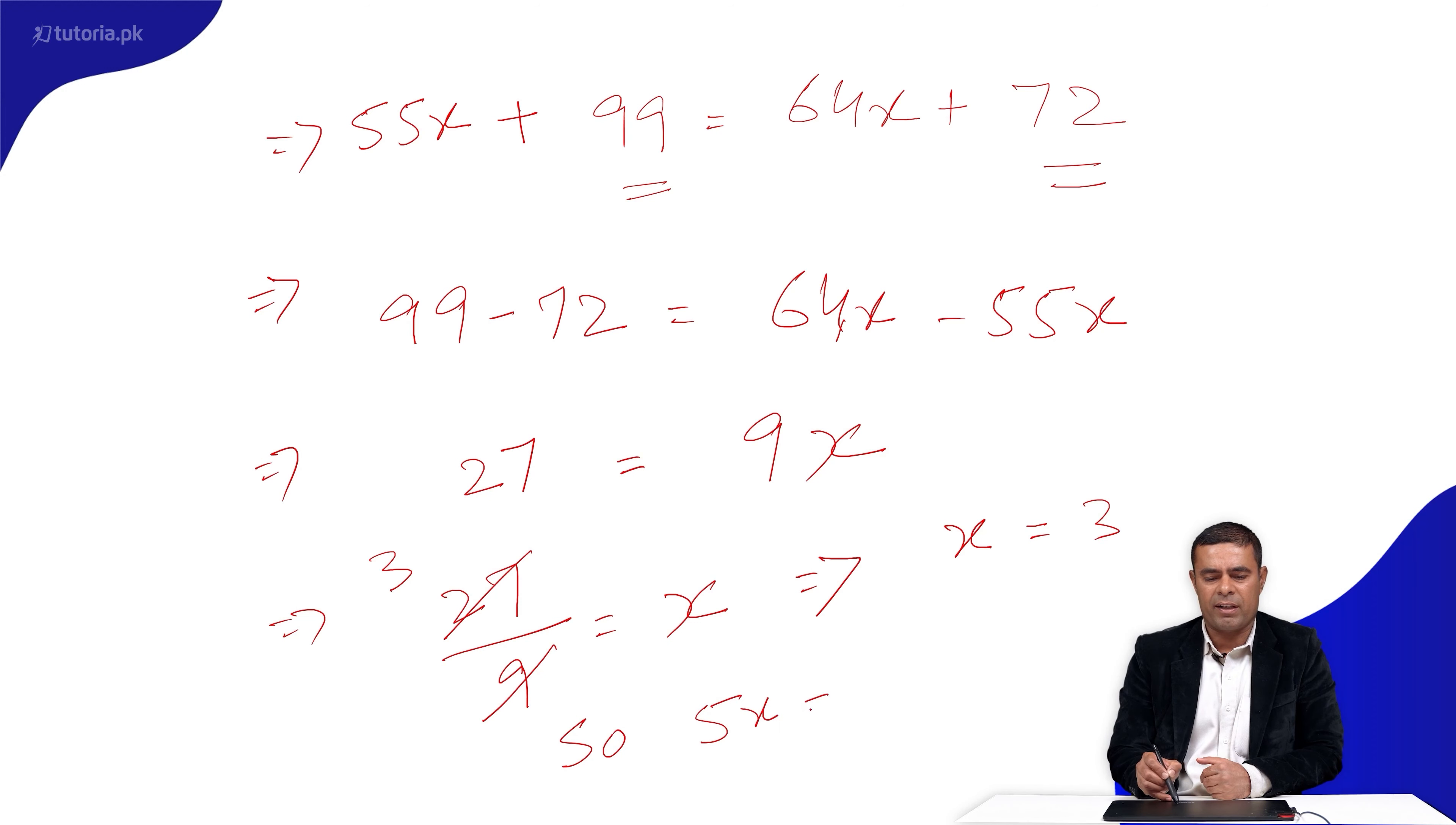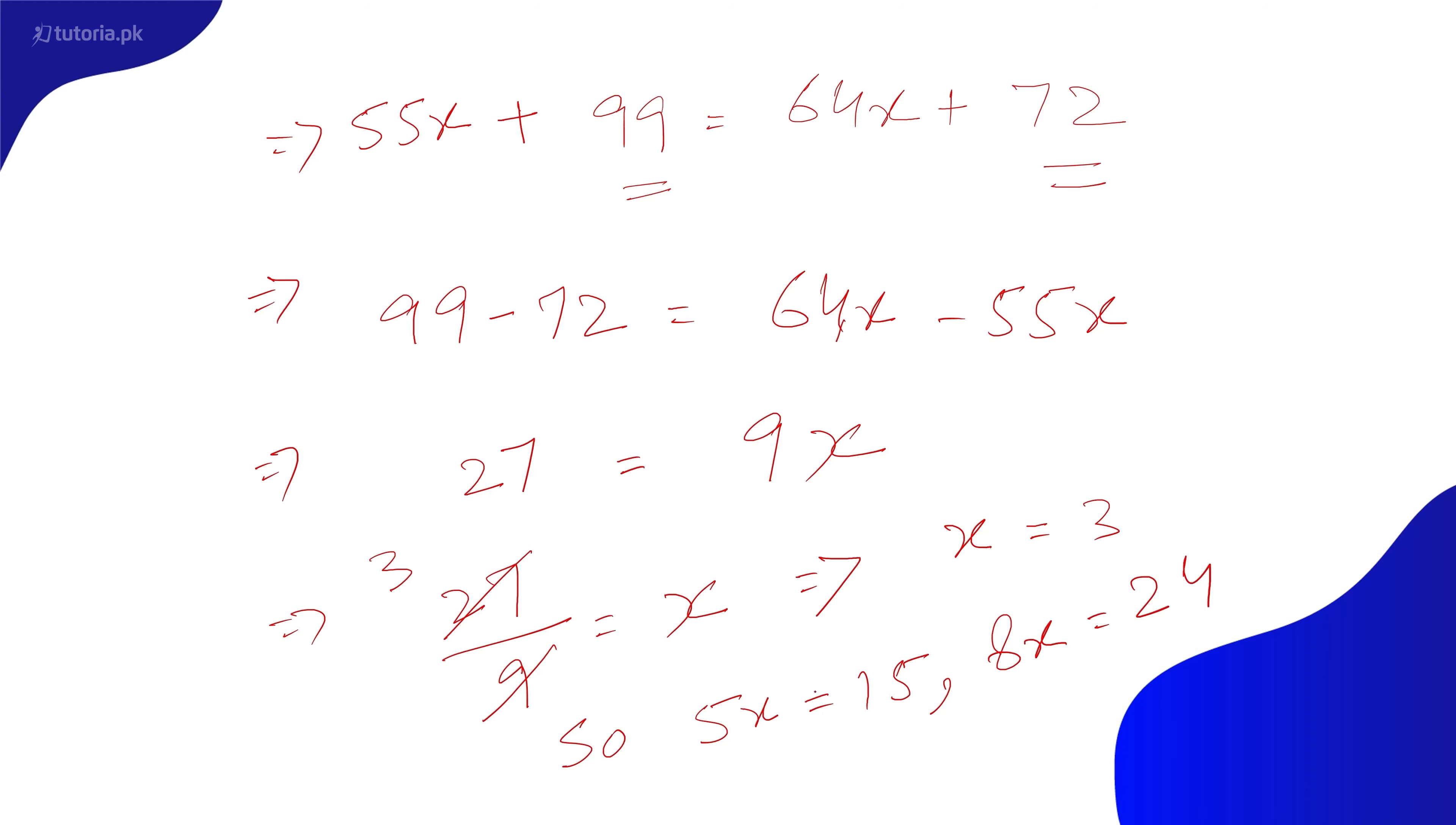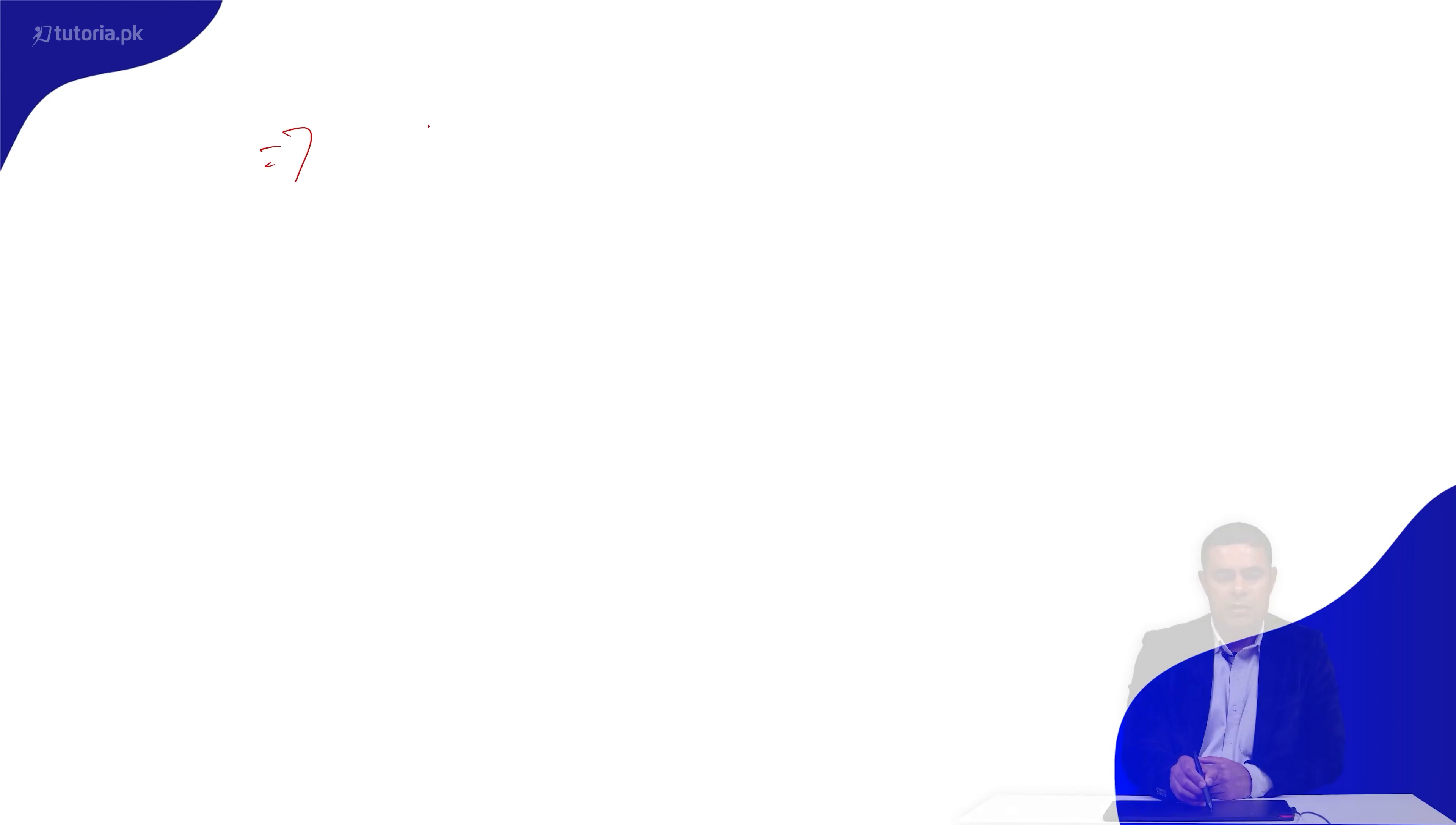So the first number is 5x = 5(3) = 15, and the second number is 8x = 8(3) = 24. The two numbers are 15 and 24.